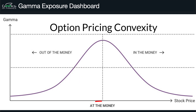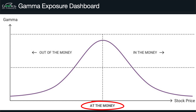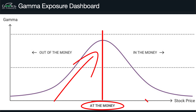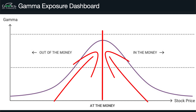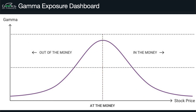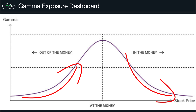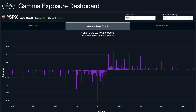Option prices don't move in a straight line — there is a convex nature to option pricing. As price moves towards at-the-money of the contract you're holding, the gamma is going to increase. Whether you're coming from out of the money or in the money, gamma is going to be highest when you are at-the-money for the particular contract you're holding.